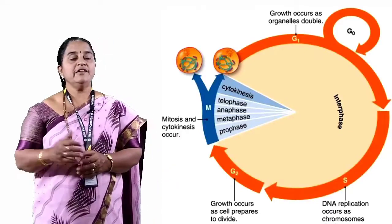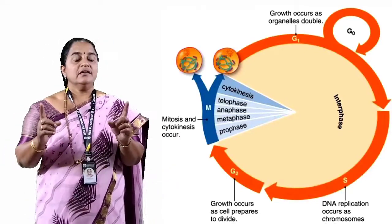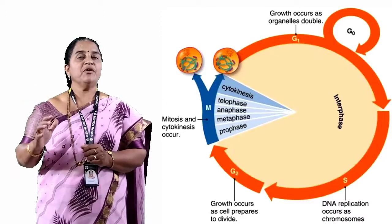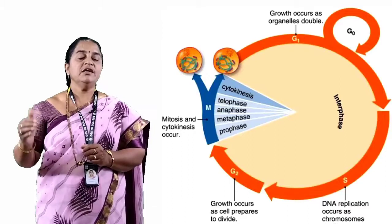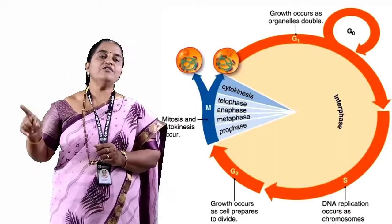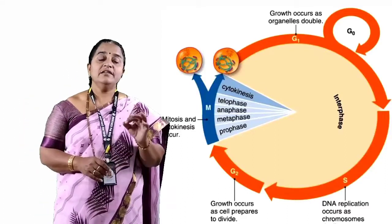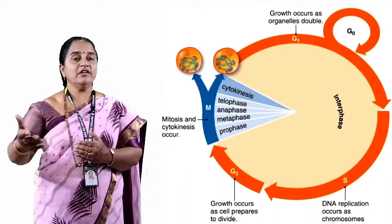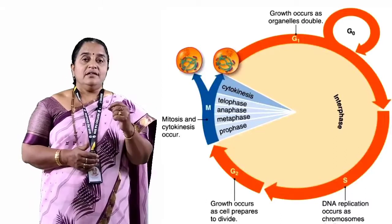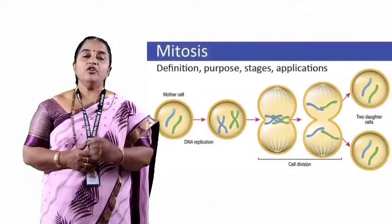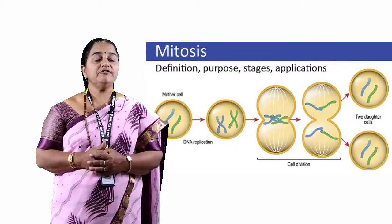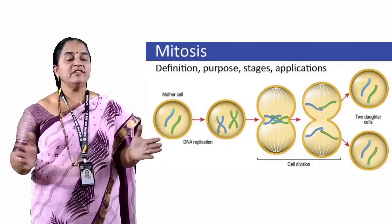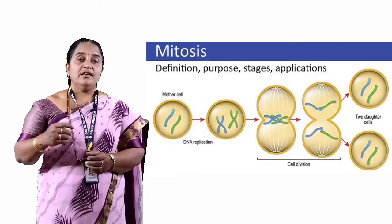Indirect cell division is further categorized into two types. Mitosis is a quite common type of indirect cell division occurring in almost all somatic cells. It is a vital process to maintain the number of chromosomes in the resulting daughter cells. Hence, mitosis is referred to as equational cell division, where the chromosomes are doubled and equally distributed to the resulting daughter cells.